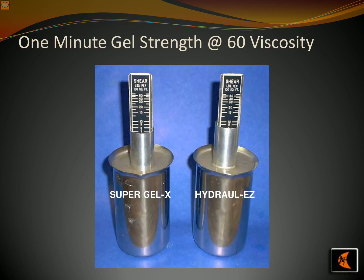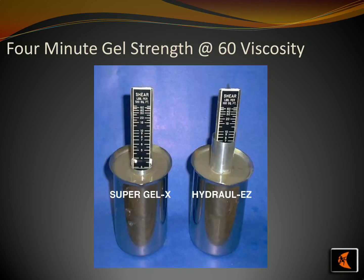Today I'm discussing two products: RED-X and HYDRA-L-EZ, which are both designed for bentonite mining. RED-X is made to raise the gel strength of bentonite mining up to 60 viscosity, resulting in improved efficiency. HYDRA-ULEZ also aims to enhance bentonite mining performance with a gel strength up to 60 viscosity. Regarding 4-minute gel strength, SuperGEL-X has a 4-minute gel strength of 35,000 layers, while HYDRA-L-EZ has a 4-minute gel strength of 40,000 layers. Both products have the same 60 viscosity, indicating excellent mixing capabilities suitable for a variety of industrial applications.